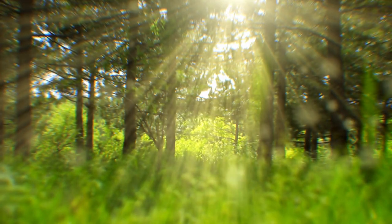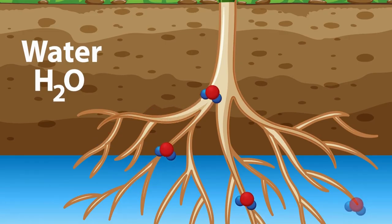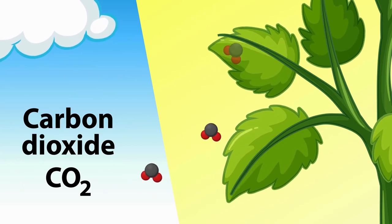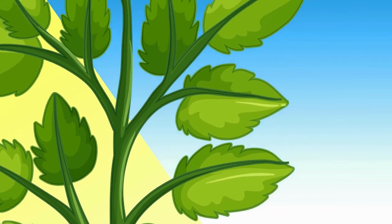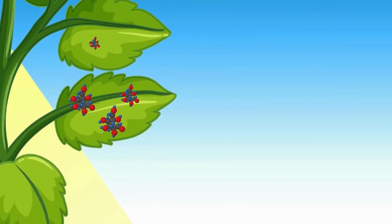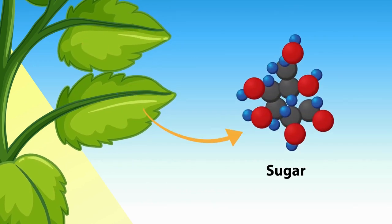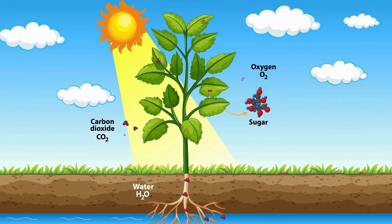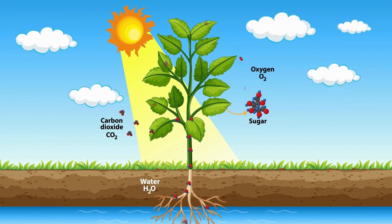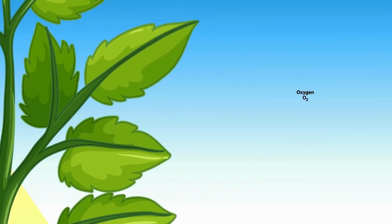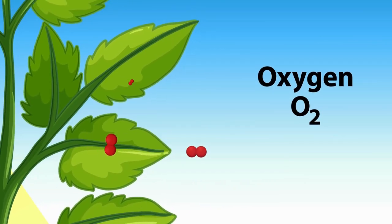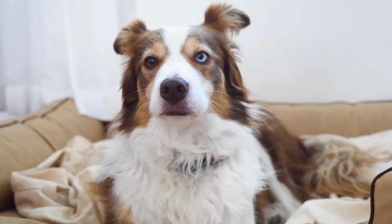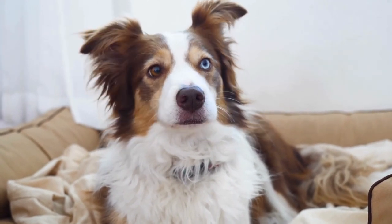Chloroplasts absorb light energy. When a plant takes in water through its roots and carbon dioxide with its leaves, it uses that light energy to split those molecules apart. Once split apart, they can be reorganized as a molecule known as glucose. It's that glucose that the plant uses to grow more roots, leaves, fruits, and seeds. In this process, there is a byproduct — a byproduct that we couldn't live without: oxygen. So basically, the oxygen we breathe is just a plant fart.